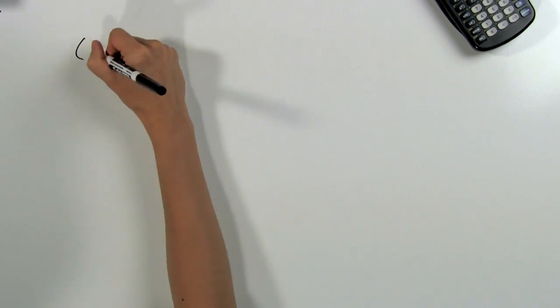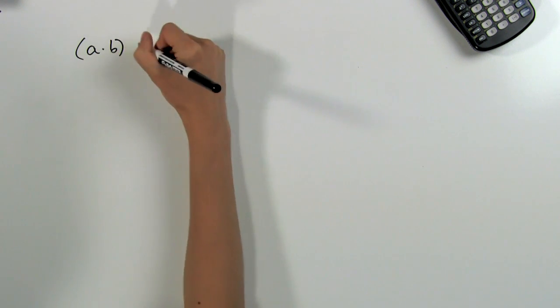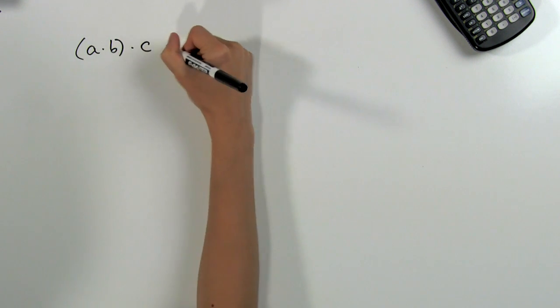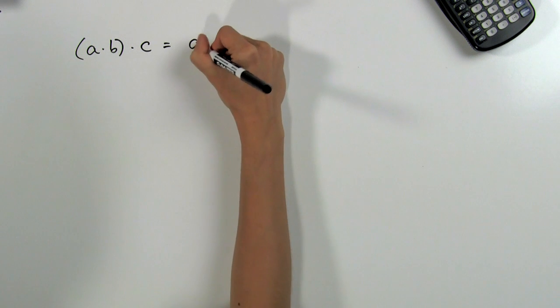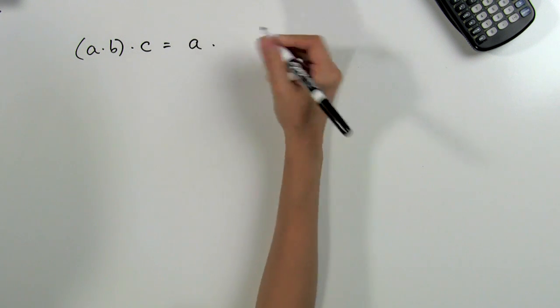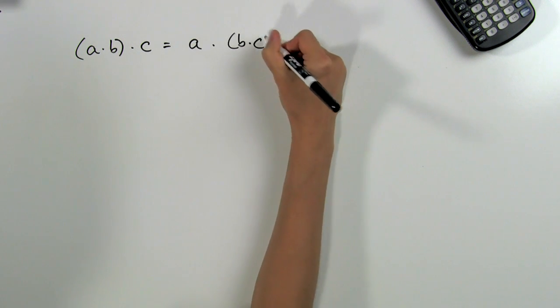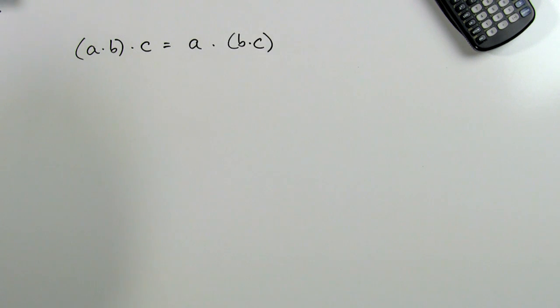First, let's take a look at what the associative property of multiplication says. It states that (a × b) × c is equal to a × (b × c). This basically means that when we are multiplying, no matter how we group our factors, the product is still the same.